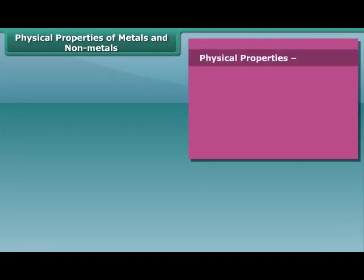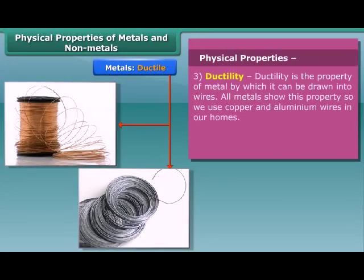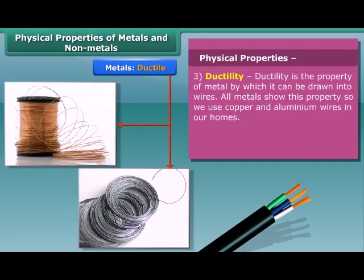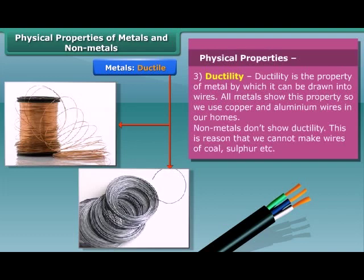The property of metal by which it can be drawn into wires is called ductility. It is the third property of metals. Non-metals don't show ductility.